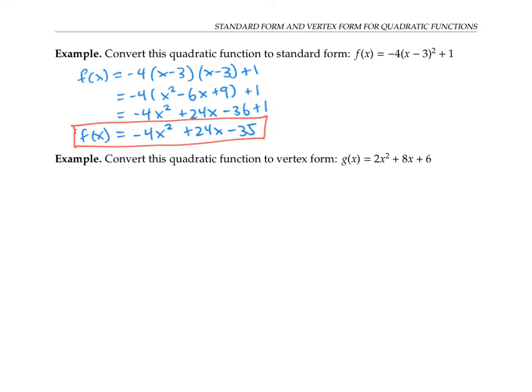Now let's go the other direction and convert a quadratic function that's already in standard form into vertex form. That is, we want to put it in the form of g of x equals a times x minus h squared plus k, where the vertex is at h, k.